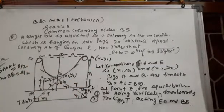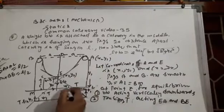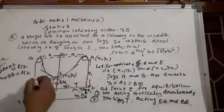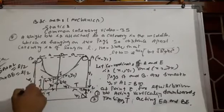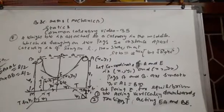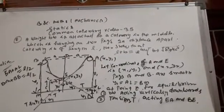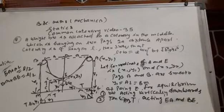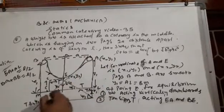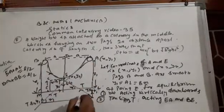Let the coordinate be (x1, y1), then distance y1 and coordinate of E equal to (x2, y2). Points A and B are smooth. Then y1 equals a·l and b, and y1 equals y1. At point E, for equilibrium conditions, this is applied with bw acting vertically downward and the tension t acting along AE and VE. The tension is equal on both sides, tension t applied here and here.